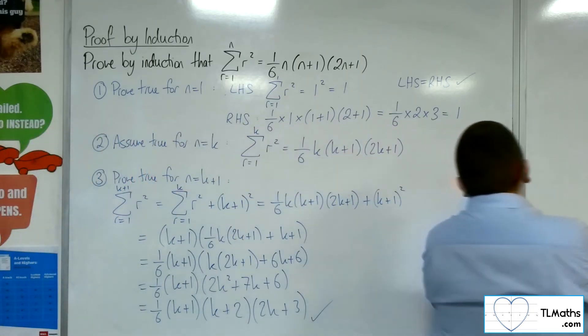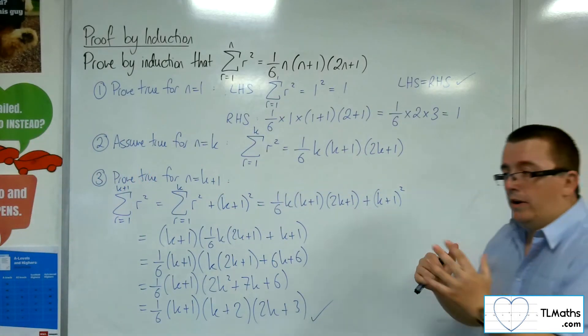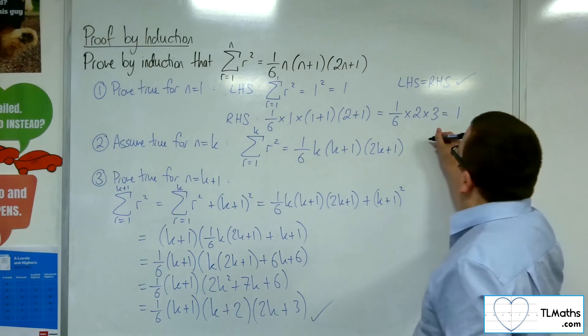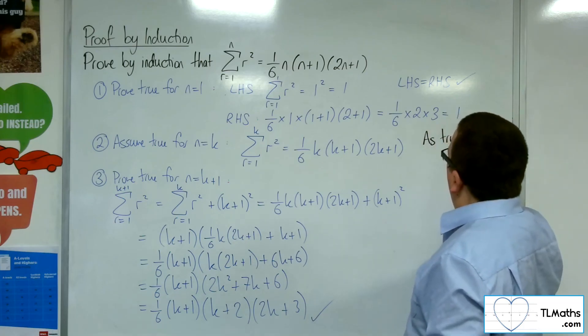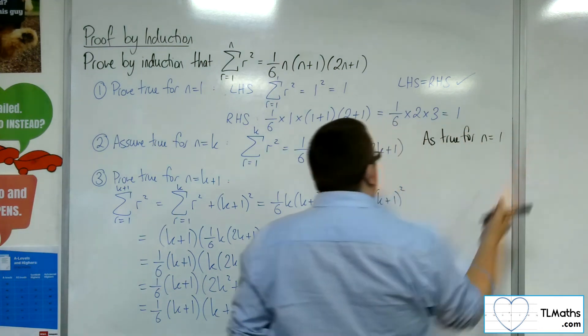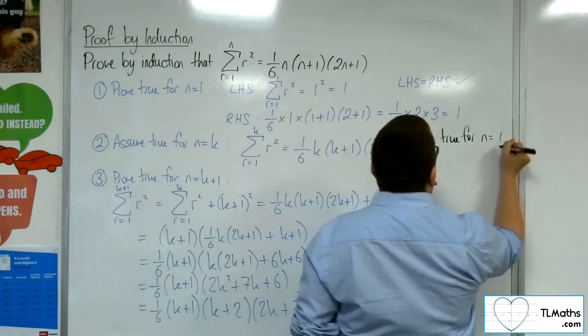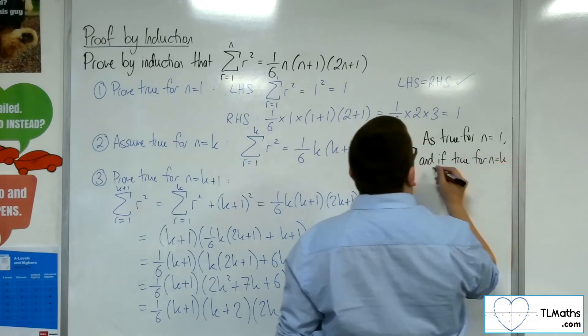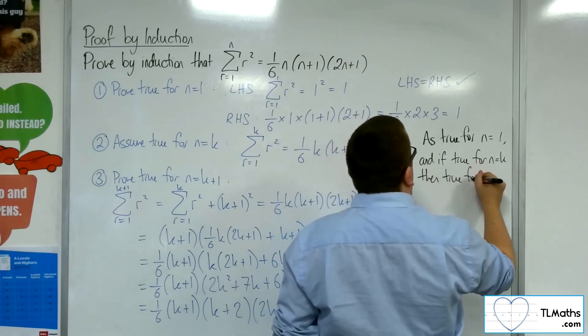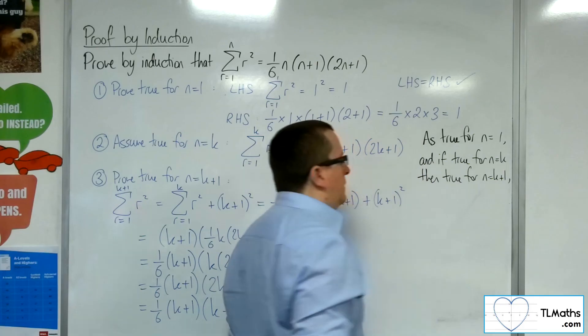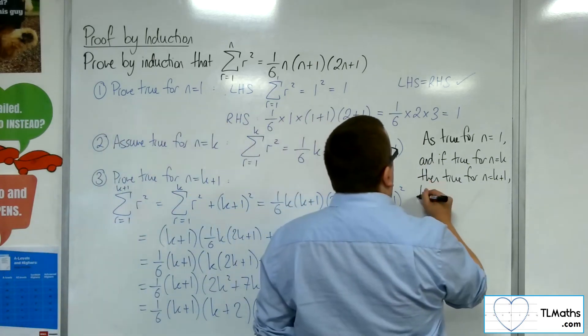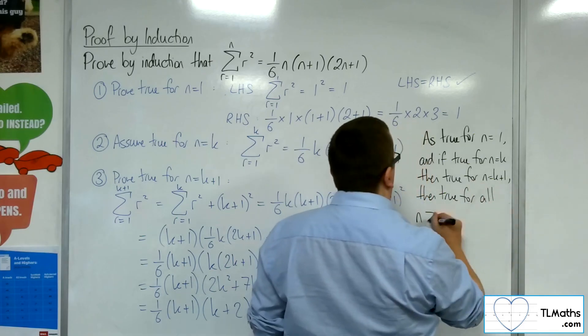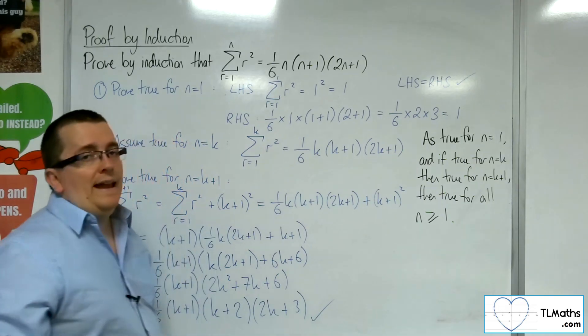Now, the concluding statement. So, as true for n equals 1, and if true for n equals k, then true for n equals k plus 1. Then true for all n greater than or equal to 1, where n here is a natural number.